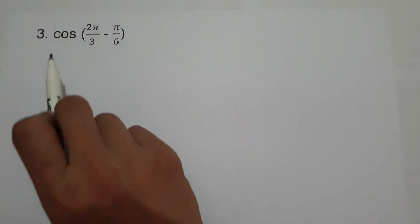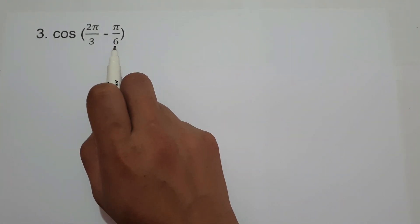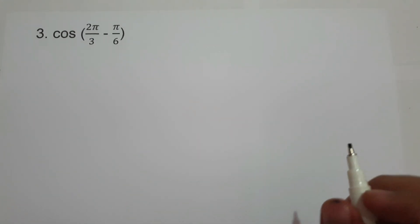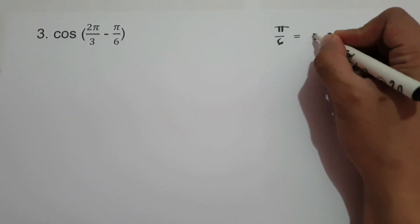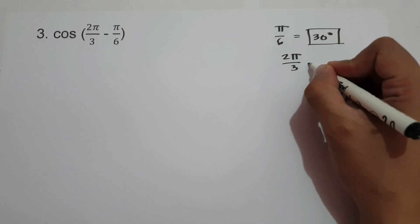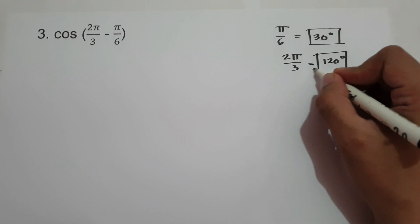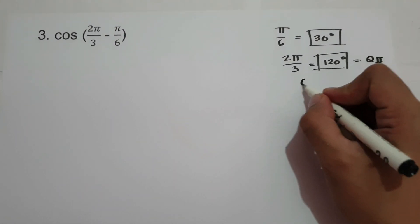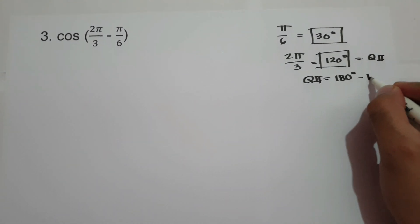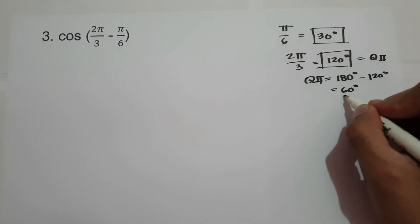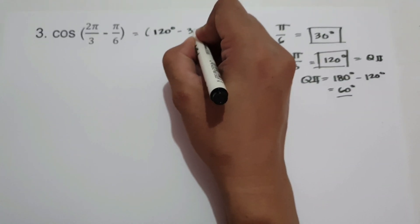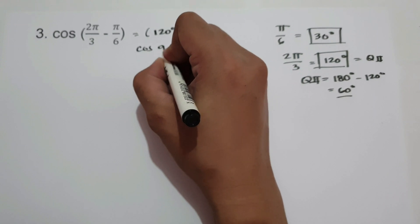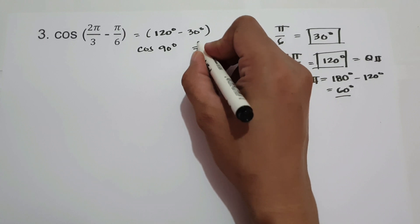On example number 3, we have cosine(2π/3 - π/6). To find the exact value, let us first convert to degrees. π/6 is 30 degrees, and 2π/3 is 120 degrees. 120 degrees is in quadrant 2, and the reference angle is 180 minus 120, which is 60 degrees. To simplify: 120 degrees minus 30 degrees gives cosine 90 degrees, and cosine 90 degrees is 0, and this will be our answer.